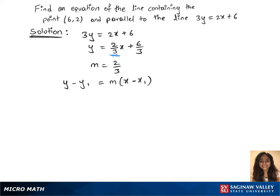We have a point, 6, 2, and the slope. We'll plug in those values in the formula. y minus y1 is 2, m is 2 over 3, and times x minus x1 is 6.